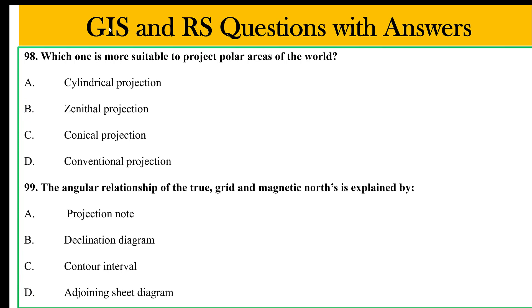Which one is more suitable to project a polar area? Options: cylindrical projection, conformal projection, conventional projection, and zenithal projection. Zenithal projection is suitable for polar areas. The angular relationship of the true north and the magnetic north is explained by the declination diagram, which shows the true north, magnetic north, and grid north ratio.